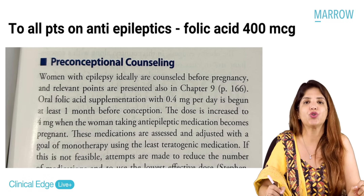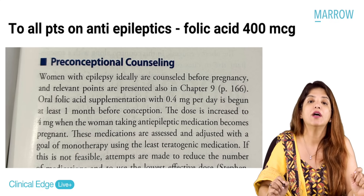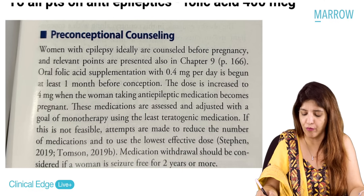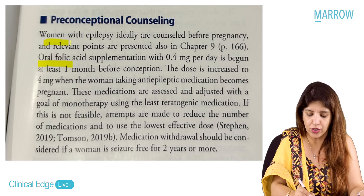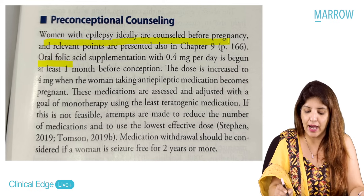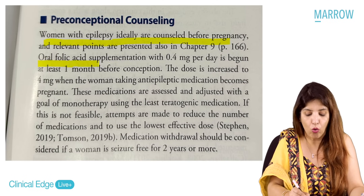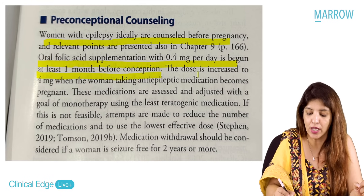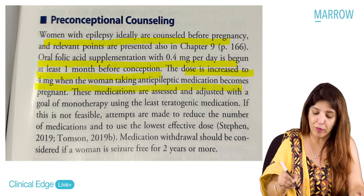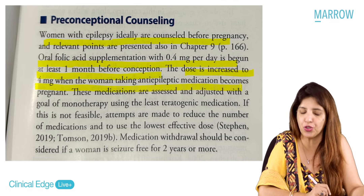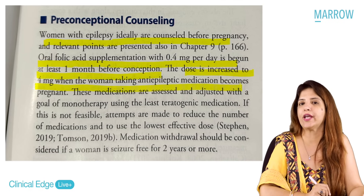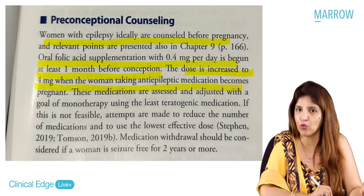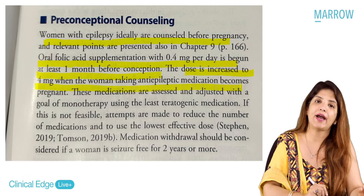During pregnancy, prefer monotherapy for anti-epileptic drugs at the lowest possible dose. As per Williams Obstetrics, for women with epilepsy: 0.4 mg folic acid per day before conception, increased to 4 mg per day once she conceives. This clears the confusion: 400 micrograms before conception, 4 milligrams after conception for females on anti-epileptic drugs.